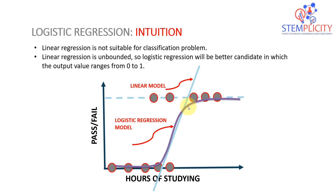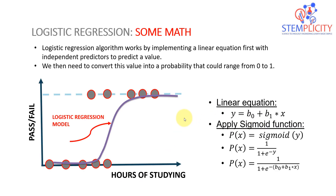Long story short: the logistic regression model is better suited for classification because it's saturated — we can set it to either zero or one. The question is, how can we move from a linear model to a logistic regression model with a curve like this? Let's take a look at a practical example and some mathematics.